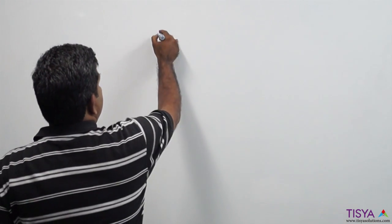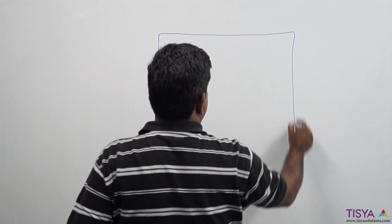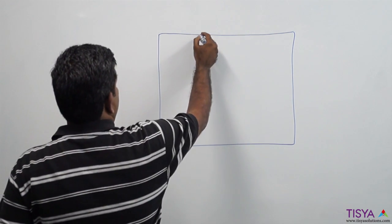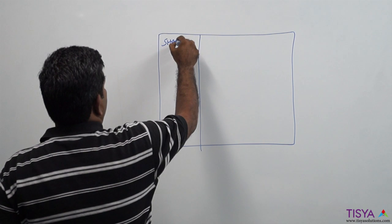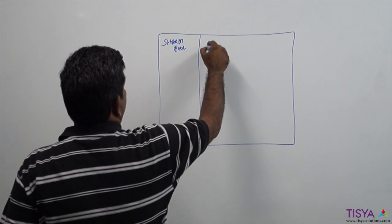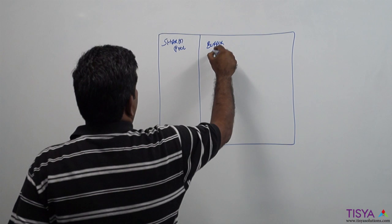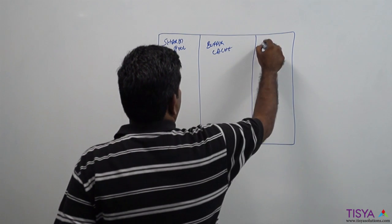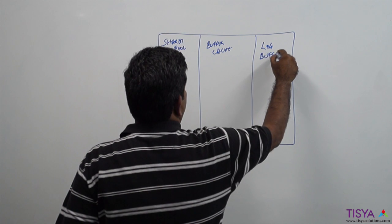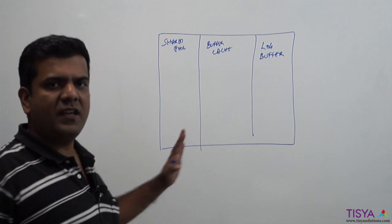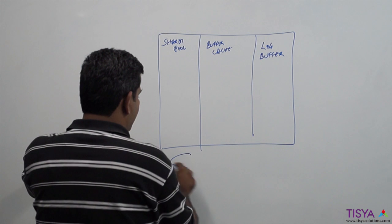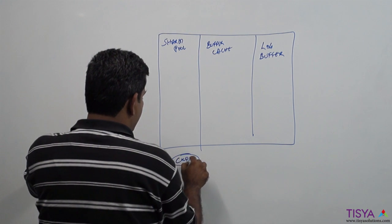In this video I'm going to talk about how a DML statement gets processed within an Oracle server. As usual, let me put up the instance made of shared pool, buffer cache, and I'm just bringing in the log buffer. These are the three memory areas we would be using.